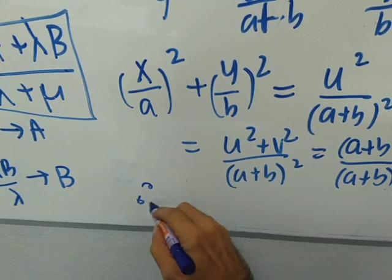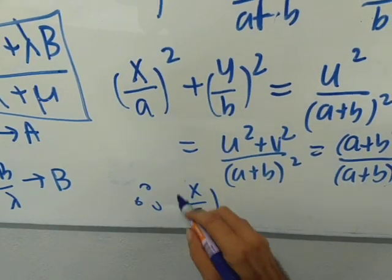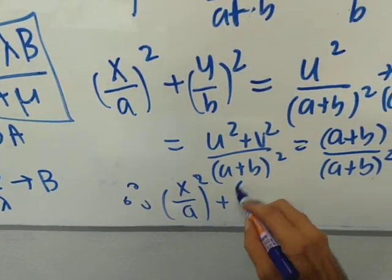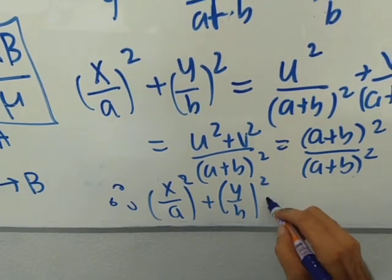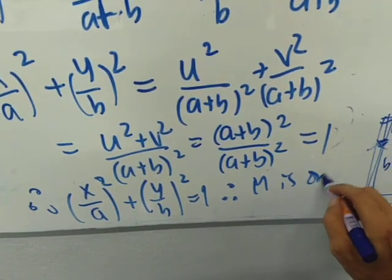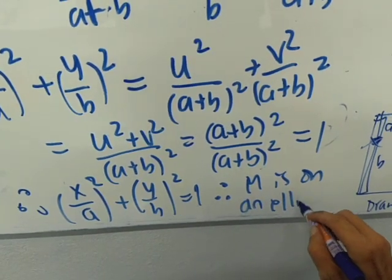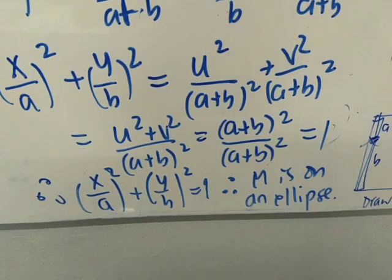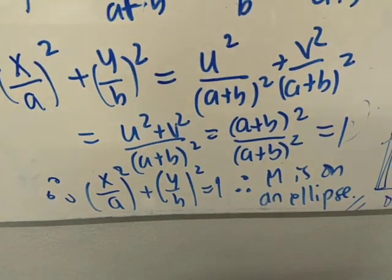And so, therefore, x over A all squared plus y over B squared equals 1. And therefore, M is on an ellipse. Beautiful, isn't it? Beautiful. Very beautiful.